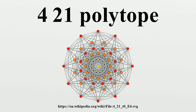It is created by a wythoff construction upon a set of eight hyperplane mirrors in eight-dimensional space. The 240 vertices of the 421 polytope can be constructed in two sets: 112 with coordinates obtained by taking an arbitrary combination of signs and permutation of coordinates, and 128 roots with coordinates obtained by taking an even number of minus signs. Each vertex has 56 nearest neighbors — for example, those whose coordinates sum to four.